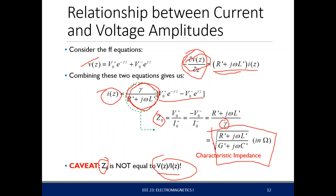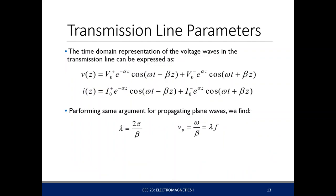To summarize: the voltage function is actually a wave. Putting the time dependence back to get the time-domain expression, we have traveling wave equations. Since there are waves, there is a velocity and a wavelength. The wavelength is 2π over beta, where beta is the imaginary component of the propagation constant. The phase velocity is omega over beta, which equals the wavelength multiplied by the frequency.